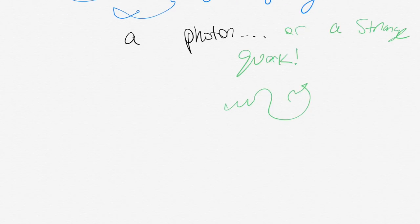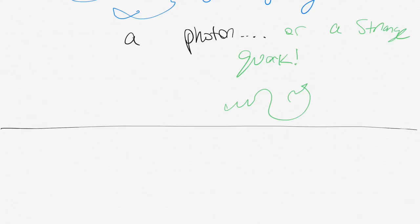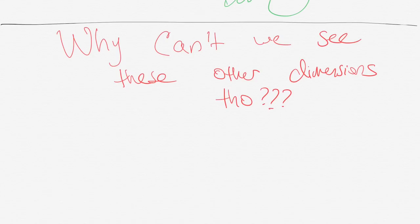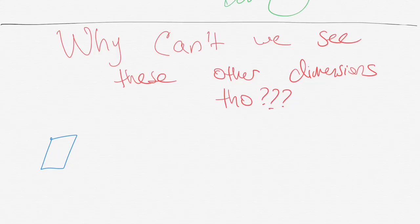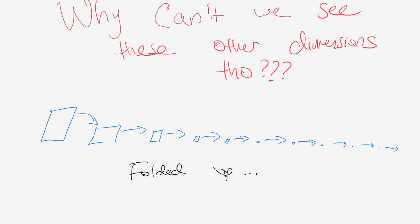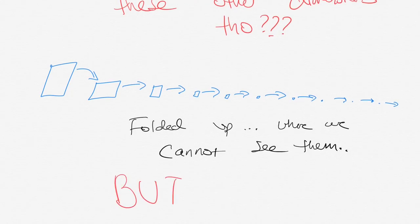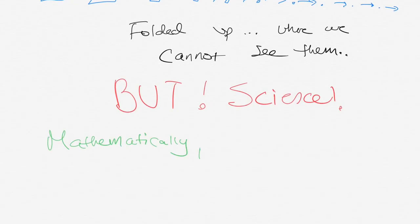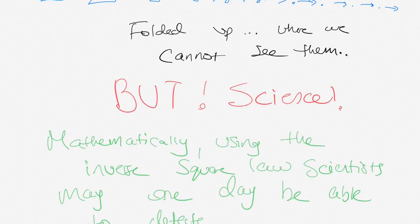Why can't we actually see these other dimensions that are created through these vibrating strings? One idea is that they're actually folded up dimensions. What I mean by that is they're so small that they're curled up to the point where we cannot even see them, or we can't even fathom them. But this is what theoretical physicists are working on right now. Mathematically, using the inverse square law that I mentioned earlier, and all those other equations, scientists may be able to actually detect it. They're doing this through so many different ways. One of them is through the Large Hadron Collider.